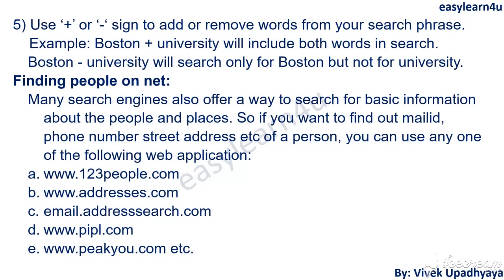To find people on the internet, there are a number of websites such as 123people.com, address.com, addresssearch.com, people.com, and pq.com. If you want to search someone's name, email ID, address, contact number, or any personal information, you can use these specific sites.